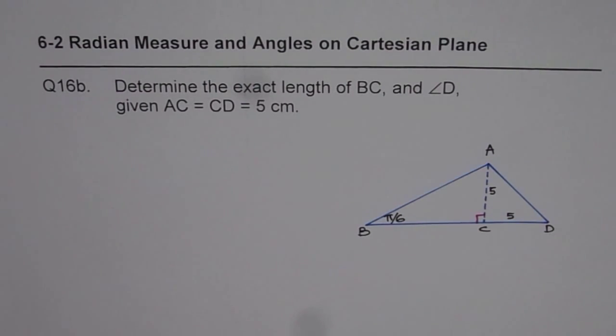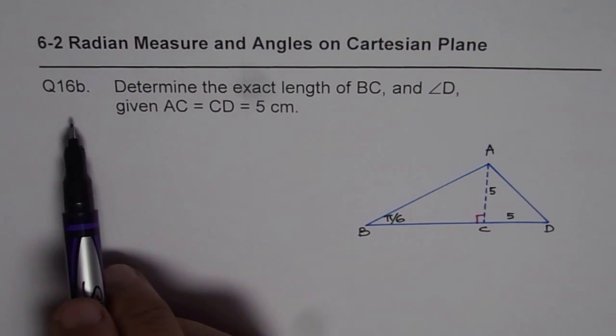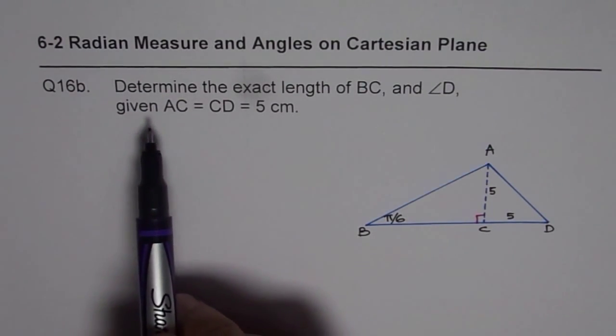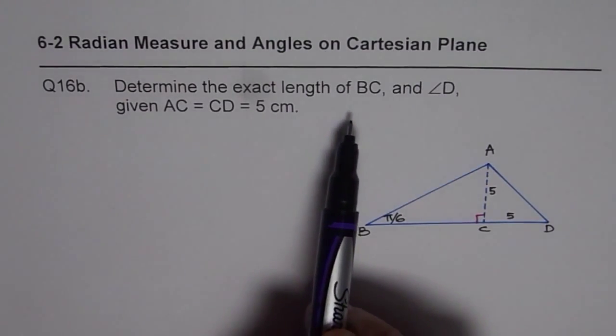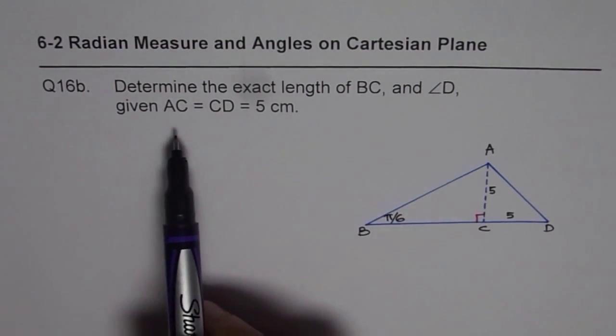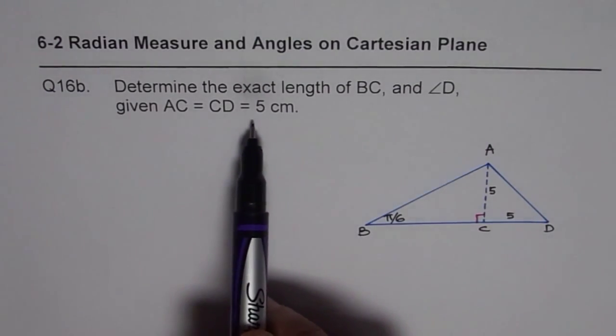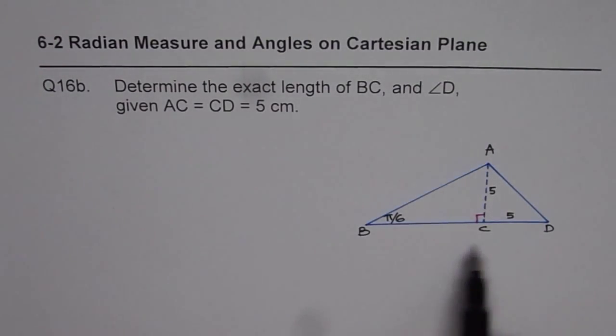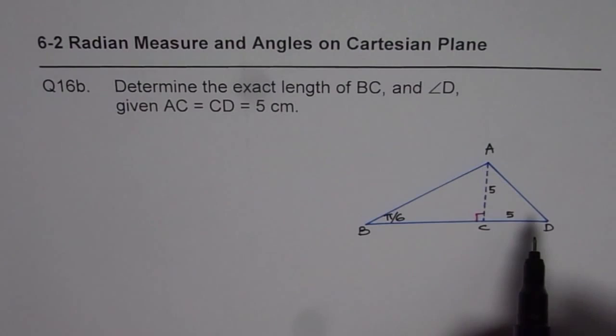For example, I have just modified this particular question from the book. So, question number 16 has been modified and now the question is, determine the exact length of BC and angle D given AC equals to CD equals to 5 cm. So it is the same diagram, but the dimensions are slightly different.